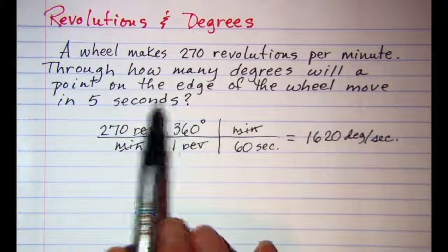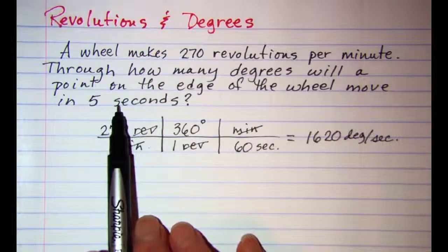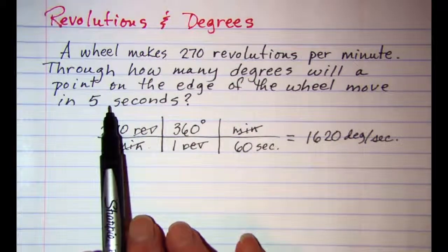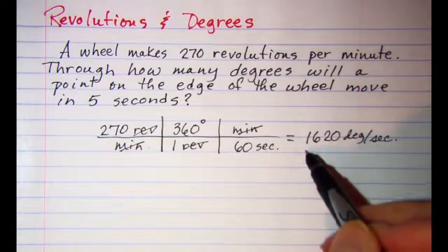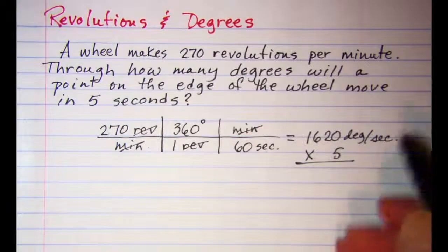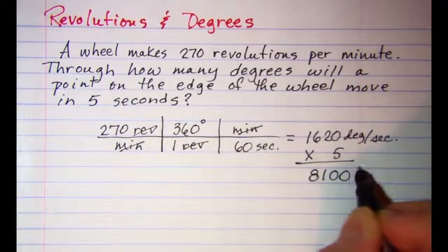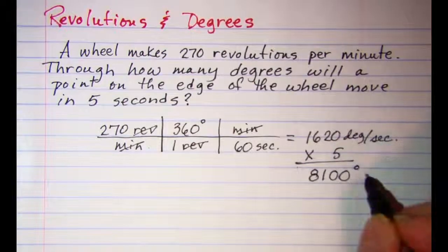Now the only thing left to do, I want to know how many degrees it will move in 5 seconds. So I just need to multiply this by 5, and that will give me 8,100 degrees in 5 seconds.